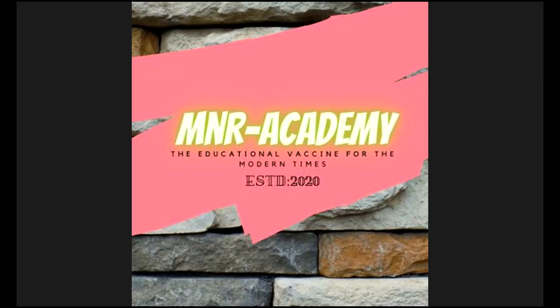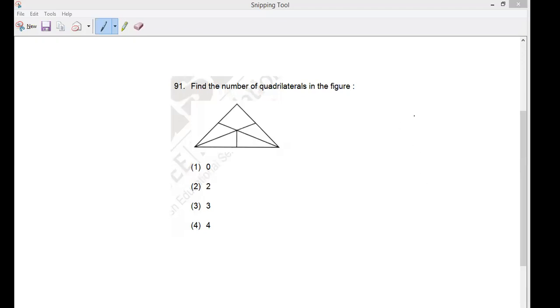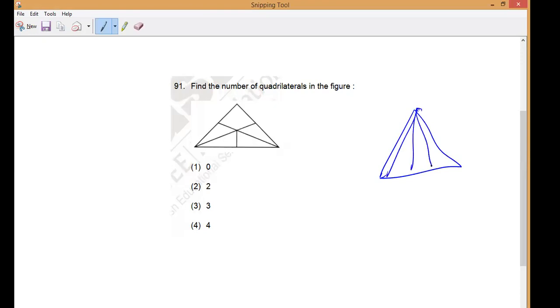Now moving to a very important question type: finding the number of triangles. The teacher asks if students remember the trick taught earlier — using natural numbers 1, 2, 3, 4 to count triangles. For example: 1 + 2 = 3, 3 + 3 = 6, 6 + 4 = 10 triangles. This is the shortcut pattern for counting triangles that was learned.